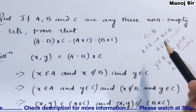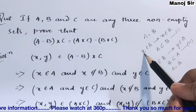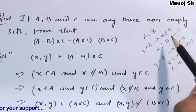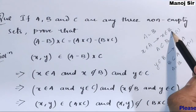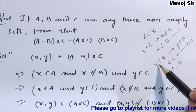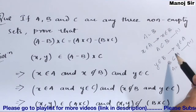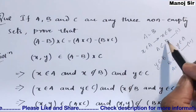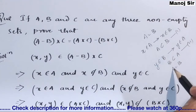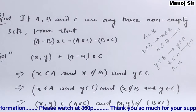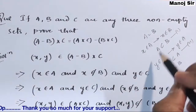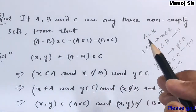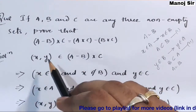To prove two sets are equal, we use the subset method. If we take an element x belonging to set A and prove x also belongs to set B, then A is a subset of B. Similarly, if we take y belonging to B and prove y belongs to A, then B is a subset of A. From both equations we conclude A equals B. Since we have the Cartesian product here, we take elements as ordered pairs x comma y.